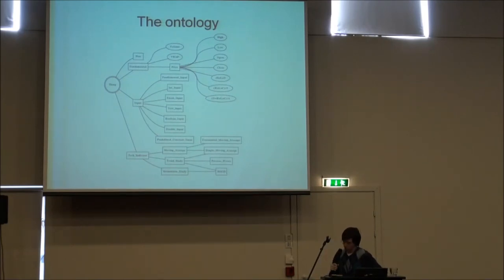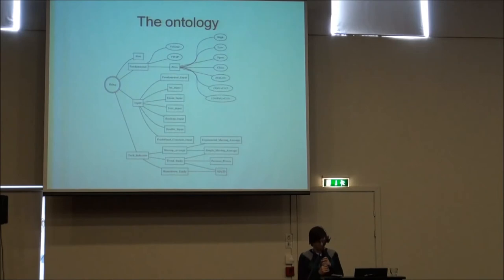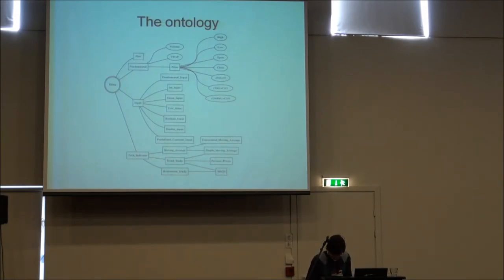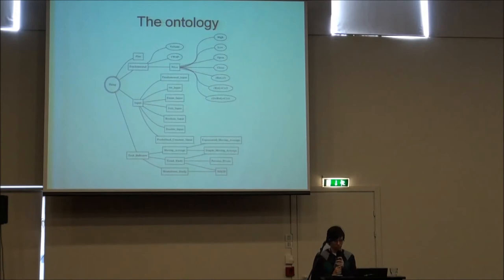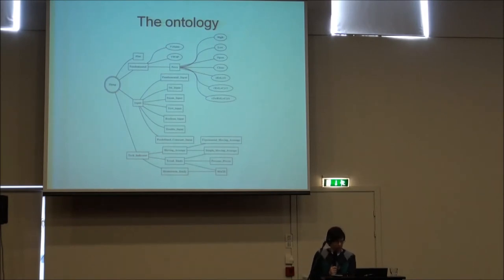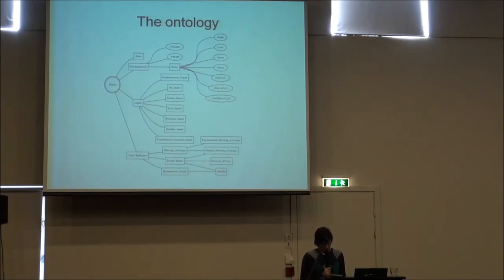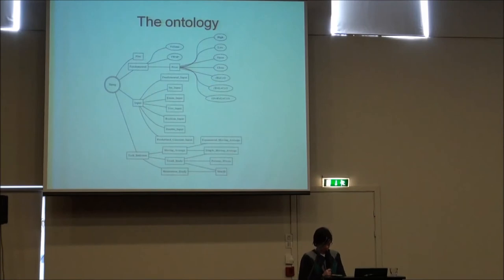This is the structure of our ontology. Let's look closely at the four main classes. The base class is called 'Thing', and the plot class represents functions — for example, the blue and red lines of MACD. This class is in development stage now. The next class is 'Fundamental', which represents statistically measured market parameters such as price, volume of trades, and so on. The 'Input' class represents parameters that functions take, and the 'TechIndicator' class represents technical indicators.